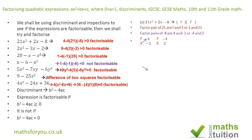Trying 7 and 3 with 4 and minus 2: cross-multiplying gives 3 times 4 equals 12, and 7 times minus 2 equals minus 14, so minus 14 plus 12 gives minus 2 — but we require plus 2, so that combination won't work. Trying 7 and 3 with minus 4 and 2: 7 times 2 is 14, 3 times minus 4 is minus 12, so 14 minus 12 gives plus 2 — that works. So the factors are (7x minus 4)(3x plus 2).